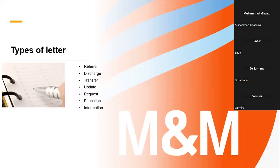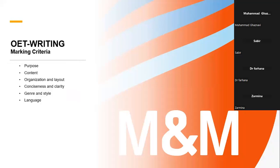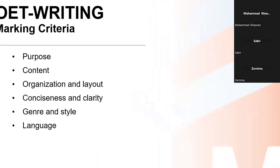These are different types of letters such as referral, discharge, transfer, update, request, and so on. The marking criteria you have to understand: first is the purpose of writing — to whom and for what we are writing the letter. Second is content — selection of the relevant case notes. Then we have organization of information — the sequence of information is important. Then we have conciseness and clarity. Conciseness means summarizing less important detail; clarity means the flow and connectivity of the information. Then we have register and style — the technical language component. You have to be polite in writing and select relevant case notes accordingly. Finally, there is the language part — sentences, tenses, and so on.